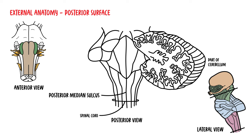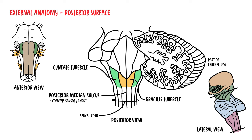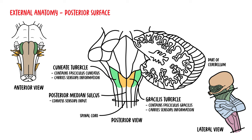The posterior median sulcus conveys sensory input from most things below the neck, including the viscera. Lateral from the midline you find the gracilis tubercle and the cuneate tubercle. These contain tracts that carry sensory information — mainly touch information — from the periphery to the brain.